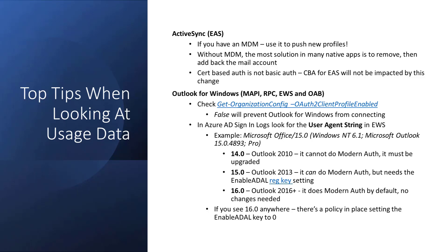For Outlook for Windows, there's a variety of protocols in use. The biggest flag is the OAuth2 client profile enabled flag — a per-tenant flag set via Set-OrganizationConfig. If that flag is set to false, Outlook for Windows cannot do modern auth. Make sure your tenant has the flag set to true. In user agent strings, the version number tells you what version of Outlook is in play: 14 is Outlook 2010, 15 is Outlook 2013 (which needs a registry key but can do modern auth), and 16 should be doing modern auth — if it isn't, either the flag is false or a policy has been pushed out.